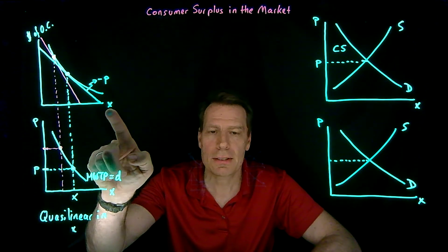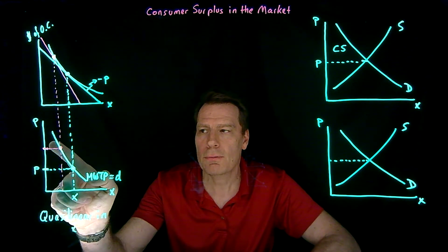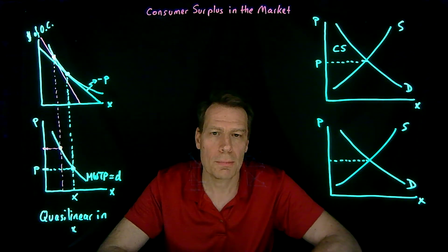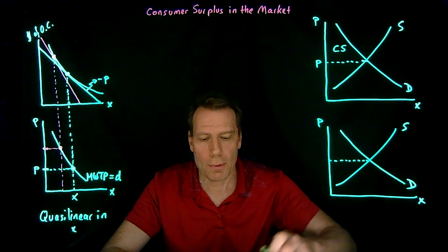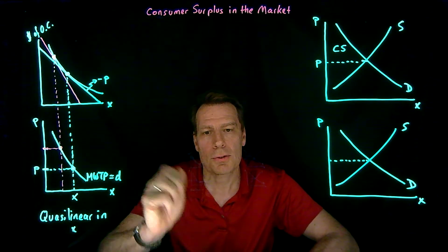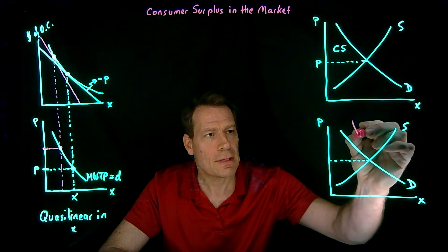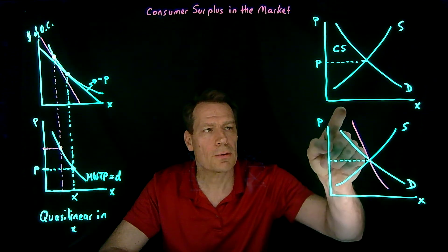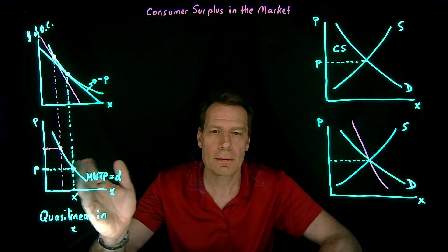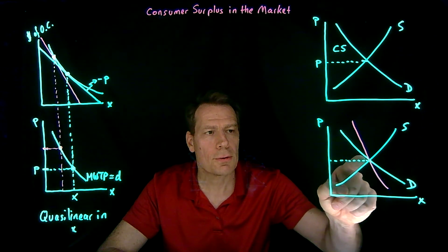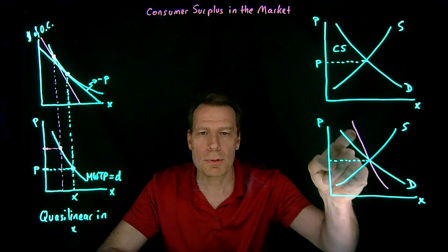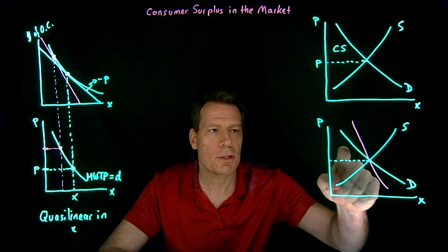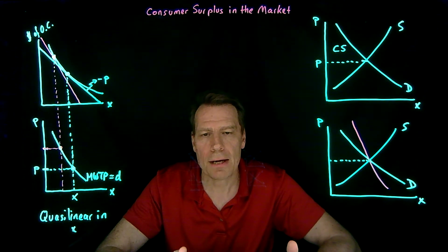If good x is a normal good for consumers, the regular demand curve is shallower than the marginal willingness to pay curve. So if all consumers had tastes making x a normal good, the market demand curve is shallower than the marginal willingness to pay curves, and the aggregate marginal willingness to pay curve would be steeper. Measuring consumer surplus along the regular demand curve would underestimate actual consumer surplus. Conversely, if x is an inferior good, the marginal willingness to pay curves are shallower, and using the regular demand curve would overestimate consumer surplus.